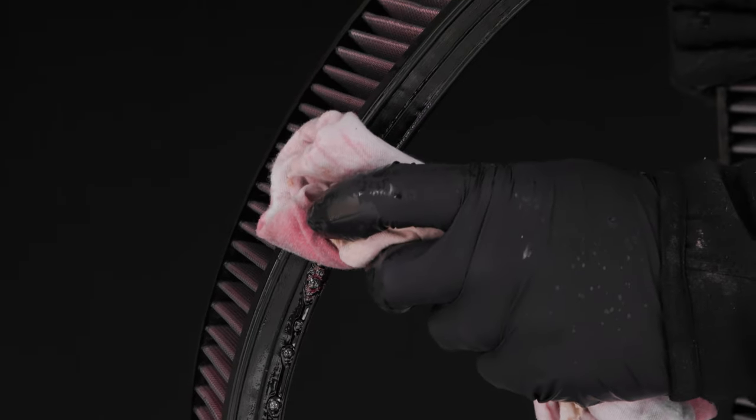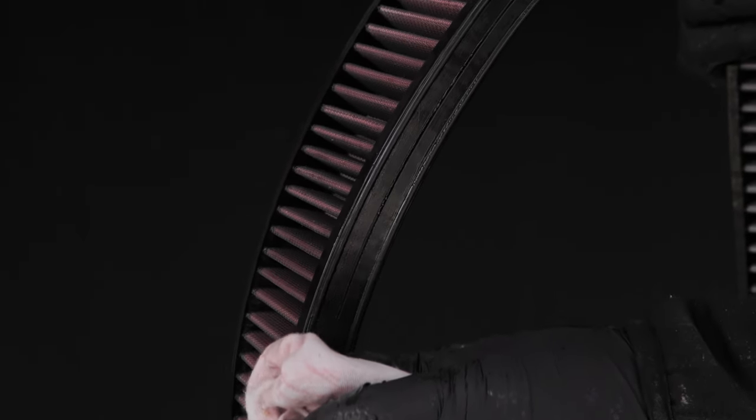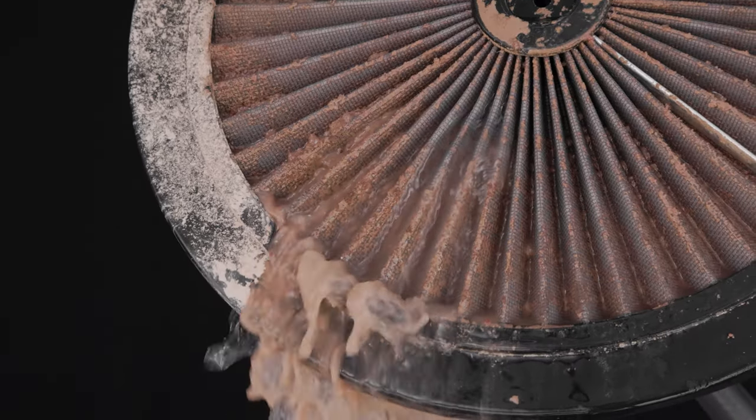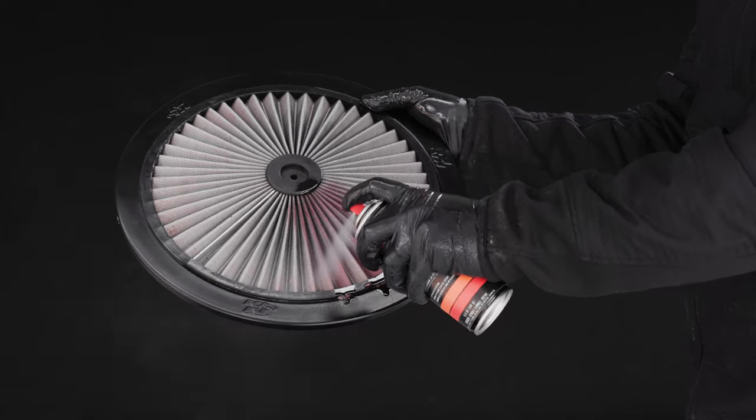Wipe off any excess filter oil and ensure none is dripping from the filter. If you have a K&N Extreme Top air filter lid, follow the same cleaning and re-oiling process.